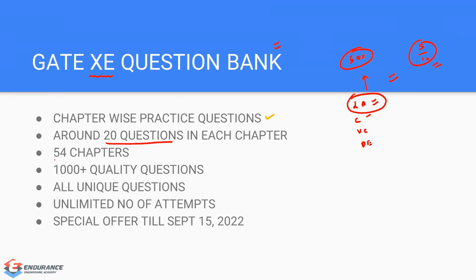We will have 54 chapters covering every topic from XC: Engineering Mathematics (A), Fluid Mechanics (B), Solid Mechanics (D), and Thermodynamics (E). Each chapter has around 20 questions, giving approximately 1000+ questions total. All questions are of good quality and are different from what you would find in other sources — that is the unique part of this question bank.